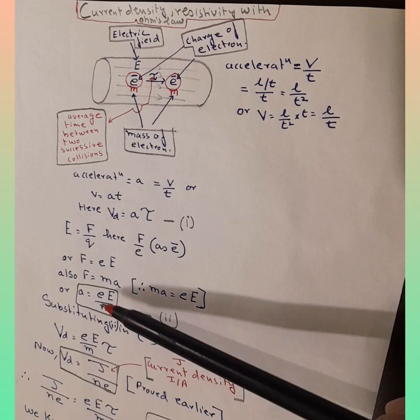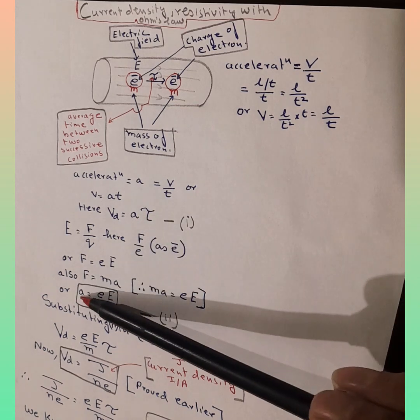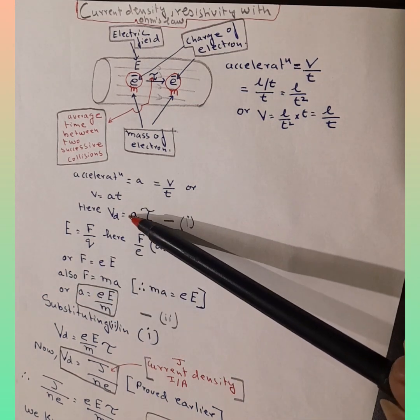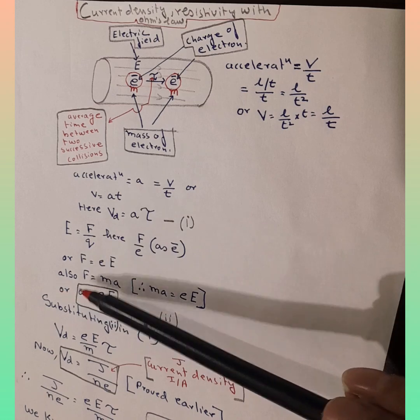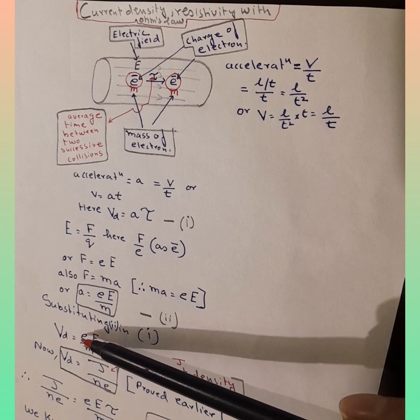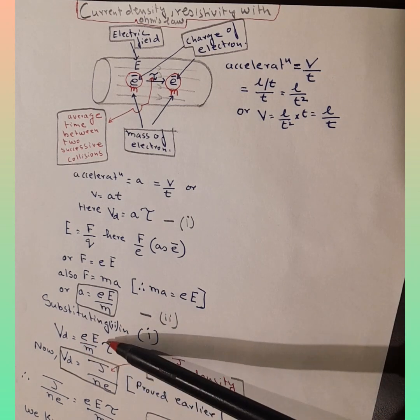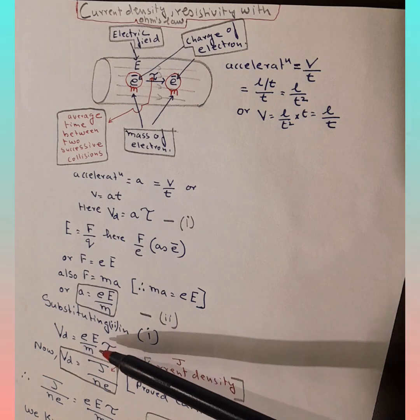Now what we do is we substitute this in this. On substitution of this over here, what we get is VD is equal to eE over small M into tau. Now in my earlier video, we have derived that VD, that is drift velocity, is equal to J over Ne.